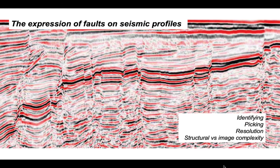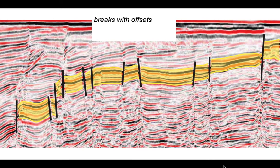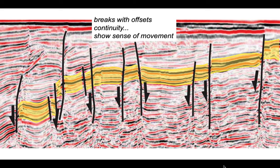So here we have a package of reflectors running across the image representing some kind of stratigraphic formation, and we can see that this is broken and offset by features here which we would infer are faults. So faults are breaks in this formation and these breaks show offsets, and we can trace the continuity of these faults away from the formation of interest up dip and down, and we can show the sense of movement by these half arrows.